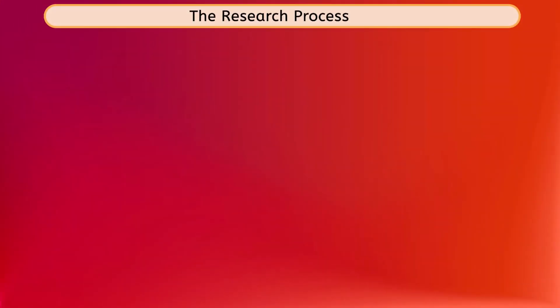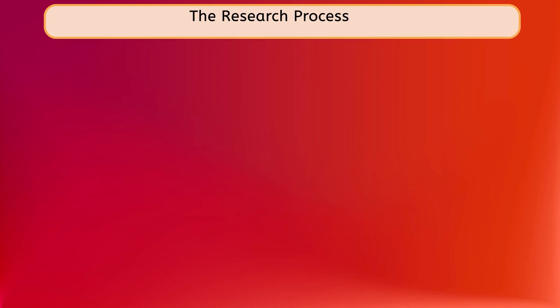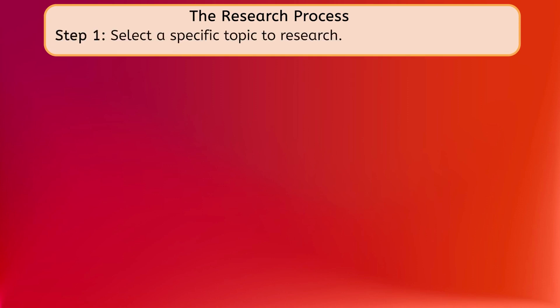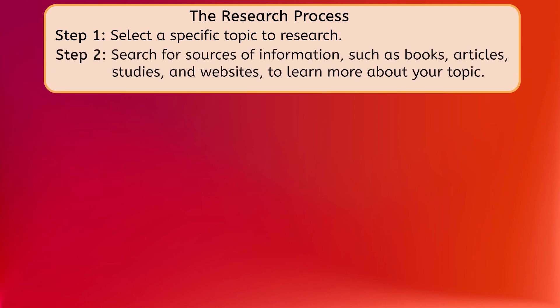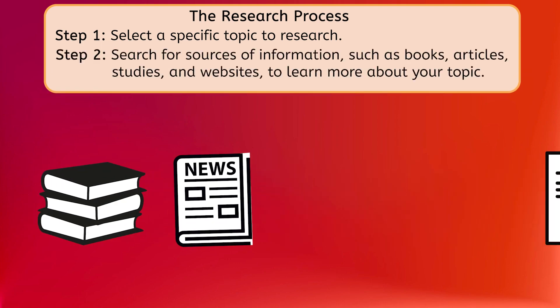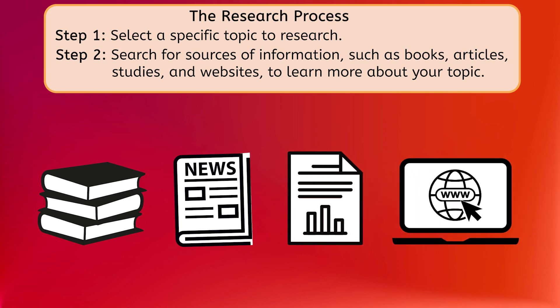Now that we understand the significance of research, let's delve into how we conduct research. Research processes can differ depending on the setting, subject matter, and project, so we'll be focusing on our research process, which we'll follow for the rest of this unit. First, you'll need to select a topic to research — begin with a broad idea and narrow it to something more specific. Step two is to search for sources of information, like books, articles, studies, and websites. You can search online or take a trip to your local library to find sources.